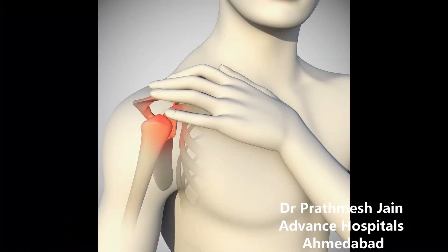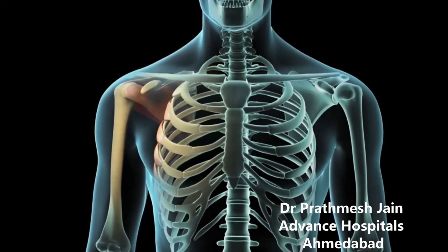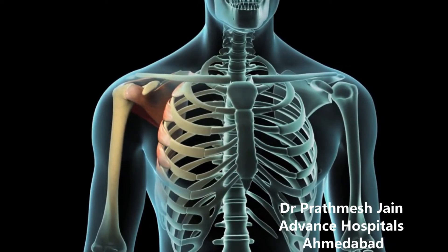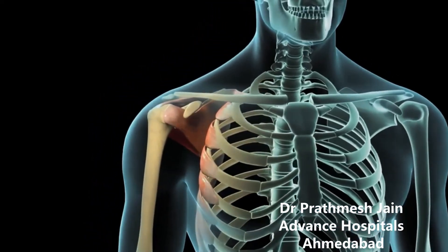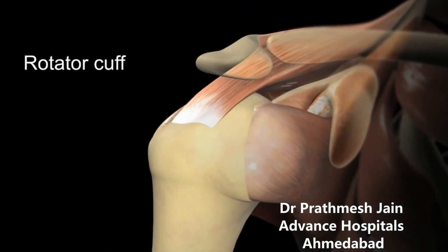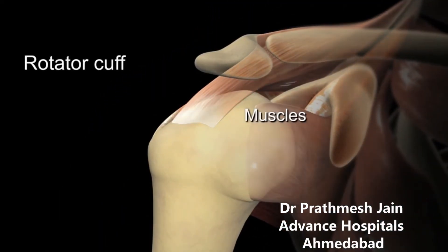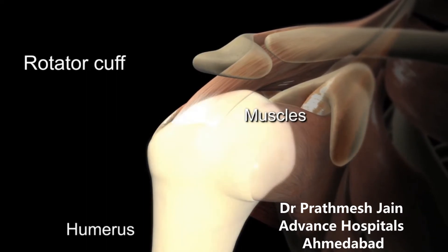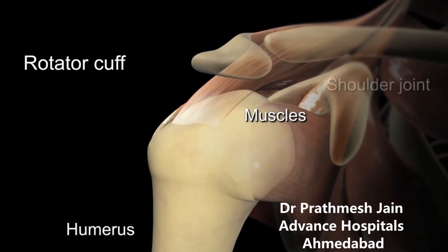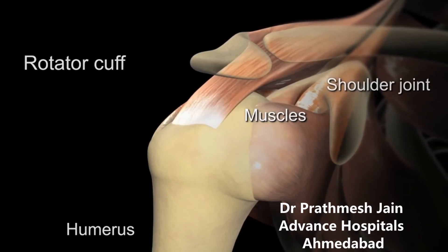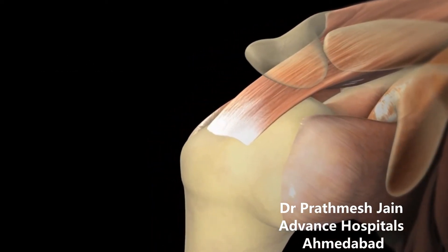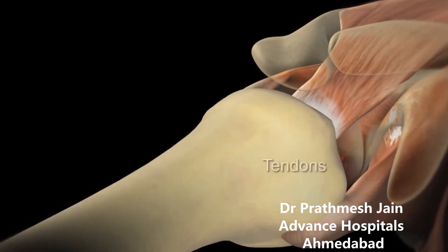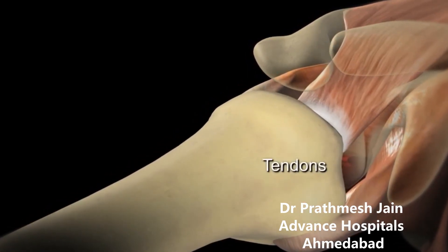Now we will explain a little bit of anatomy of the shoulder. The shoulder joint comprises a ball and socket joint, and the rotator cuff muscles surround the shoulder. There are two bones — the humerus and the scapula — and the glenoid and the humerus make the shoulder joint. These muscles perform movements which lead to movement of the shoulder.